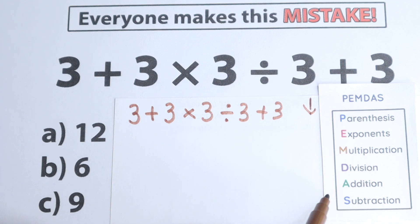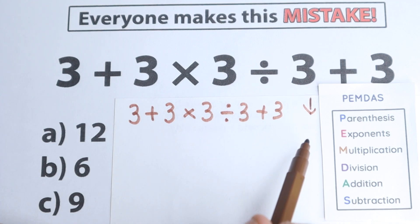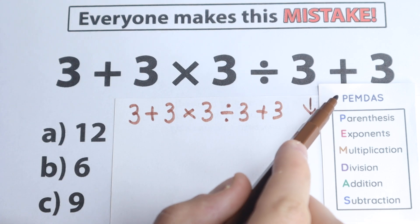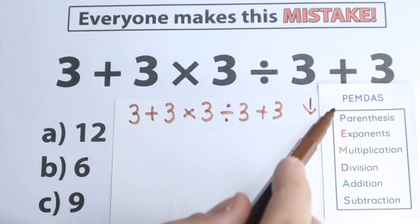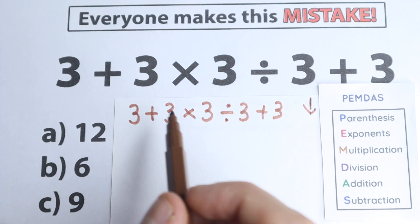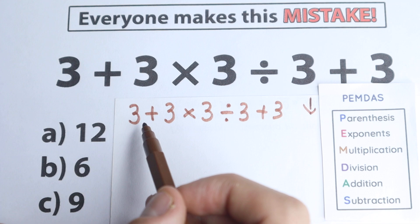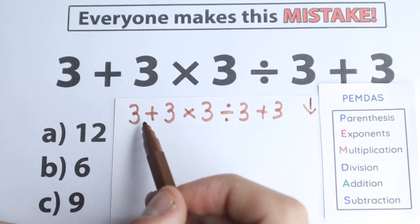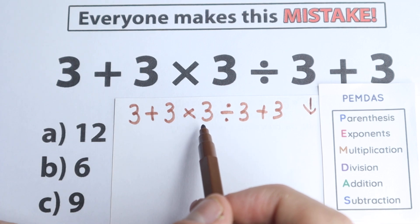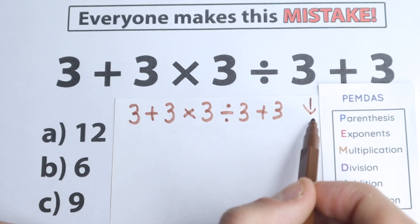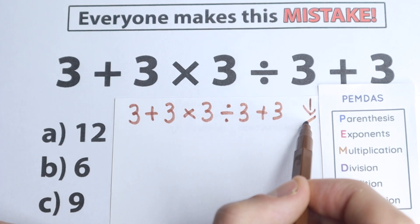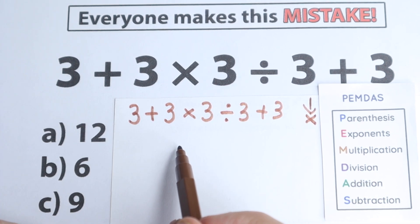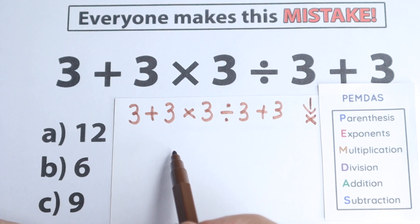The first step according to PEMDAS is Parentheses — the first letter P stands for parentheses. Now we need to scan where we have any parentheses. Let's look at it. I don't see any parentheses, we don't have any parentheses, which is really great. So we can skip this step because we don't have any parentheses.